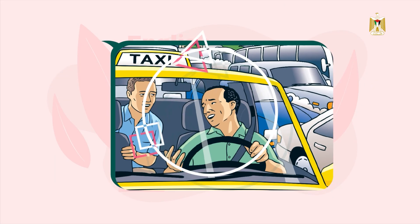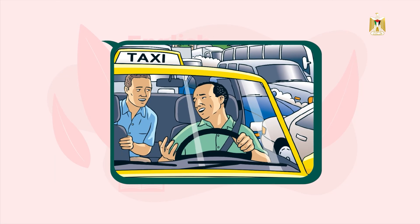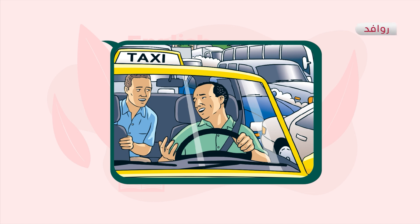What can you see in the picture? We can see a taxi driver in his car, talking to a man. Maybe he is a visitor. And they are talking about the traffic in the city.